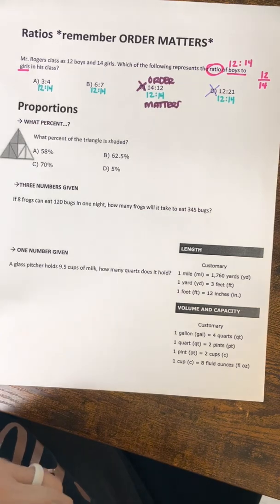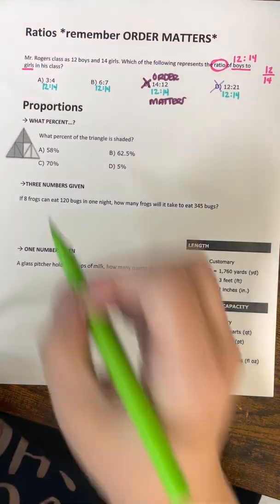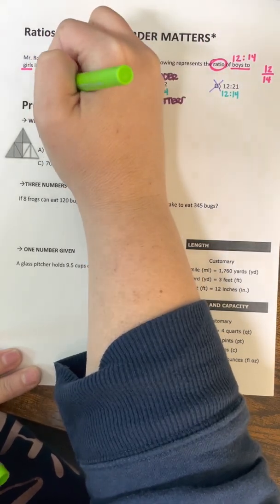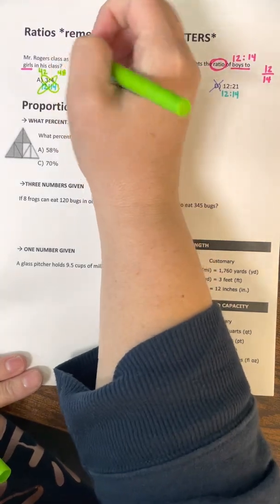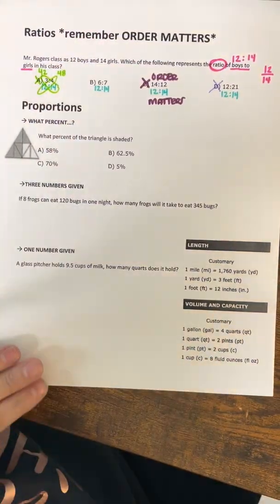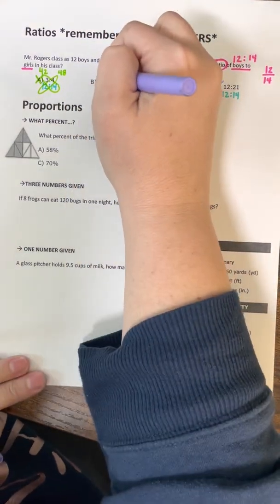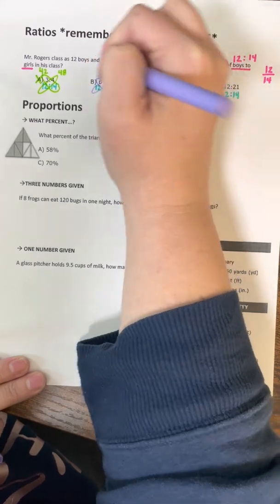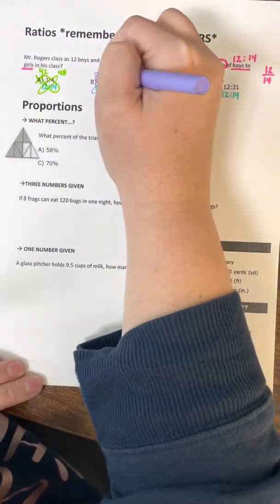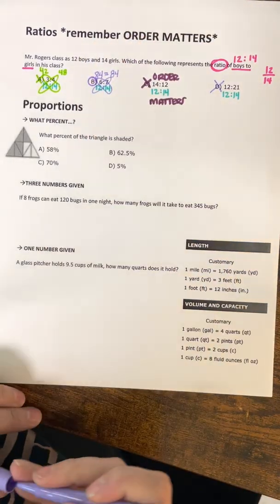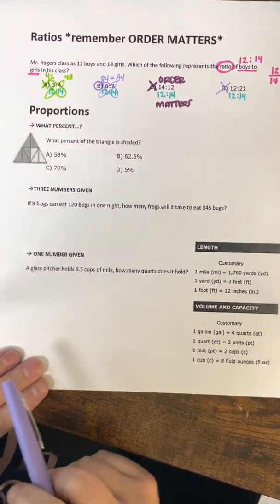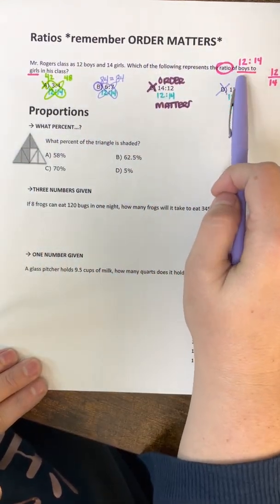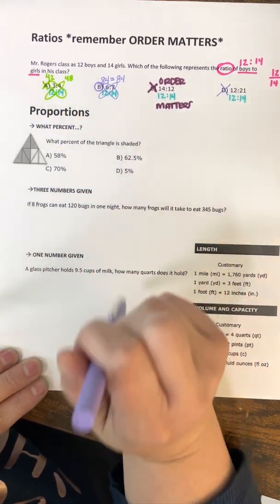So now I'm just going to butterfly my first two. I'm going to butterfly 4 times 12, which is 48. And then 14 times 3, which is 42. 42 does not equal 48, so A is wrong. So the last one that we have to butterfly is going to be B. 12 times 7 is 84, and 14 times 6 is also 84. If 84 equals 84, then B is my right answer. So that was just a refresher on ratios. Remember, order matters. And remember that if you have boys first, then you have to put the order first here.